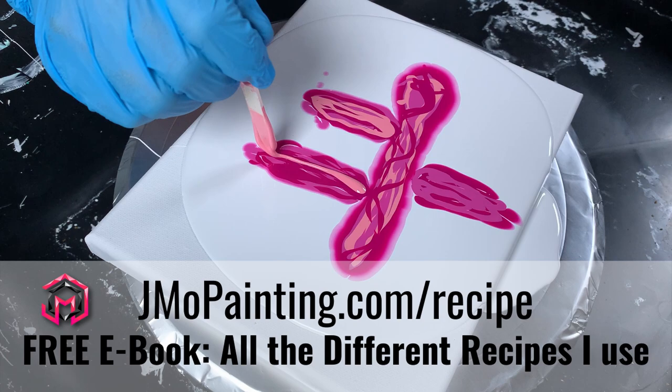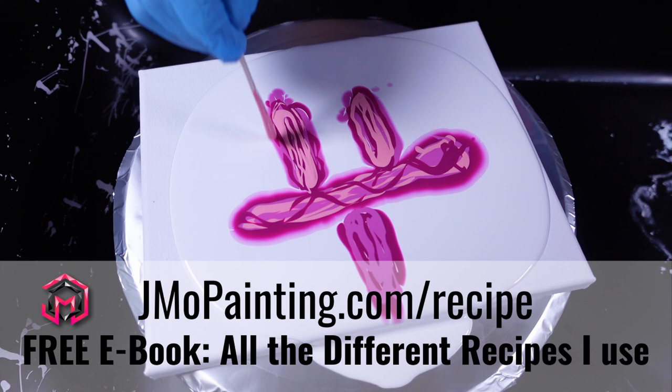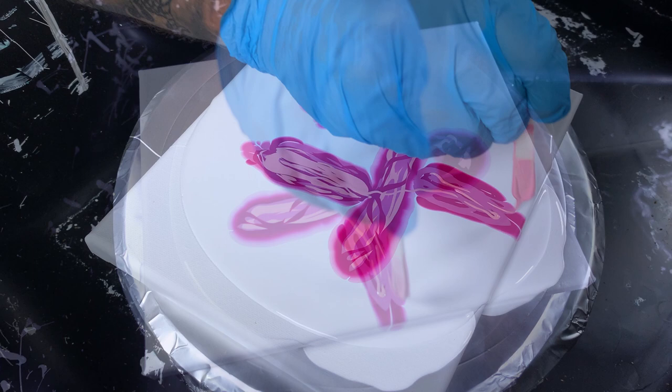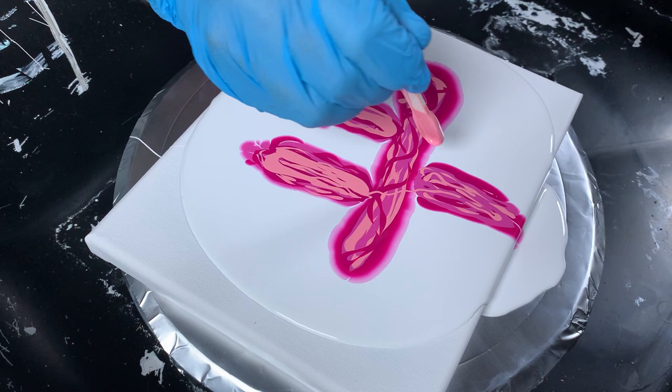I'm going to put a link down in the description. It's at jmopanning.com/recipe. Now you're going to get a glue recipe, a flowtrol recipe, a water recipe, and a bloom recipe in that book, completely free, just because you guys are amazing.